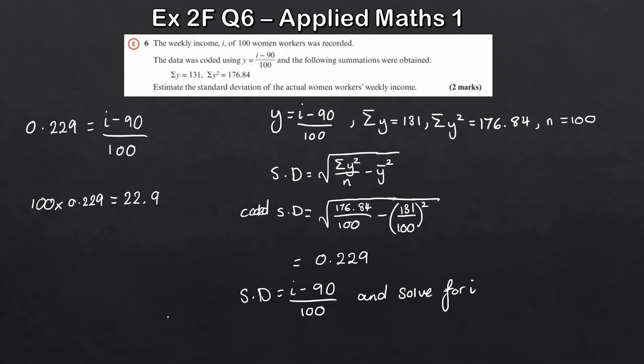But the question finishes here. So I said we rearrange and just solve for I here. But the thing is with a standard deviation, it doesn't matter what you add as a constant to the standard deviation. It will have no effect on the standard deviation. So it doesn't matter if this was minus 90, it doesn't matter if it's plus 10, plus a million. The standard deviation will always remain what it is here.